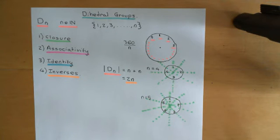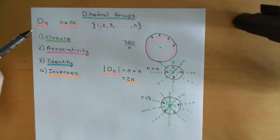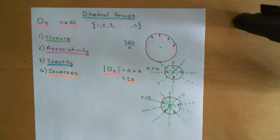Welcome back to this next video in which we are discussing dihedral groups. We've discussed that the dihedral groups are this class of groups, which we denote D little n, where little n can be any natural number: 1, 2, 3, 4, 5, etc. onwards.